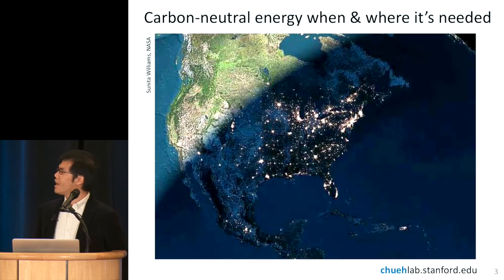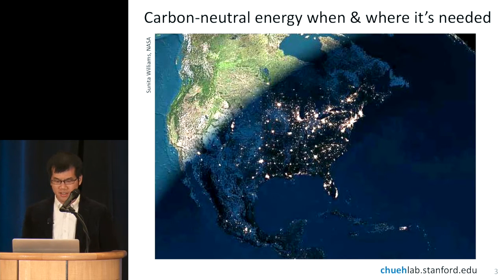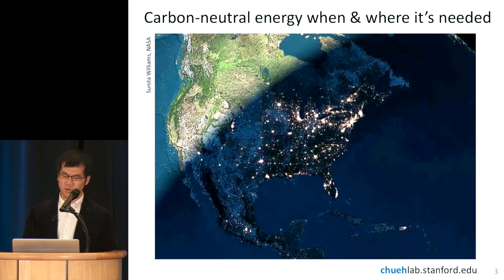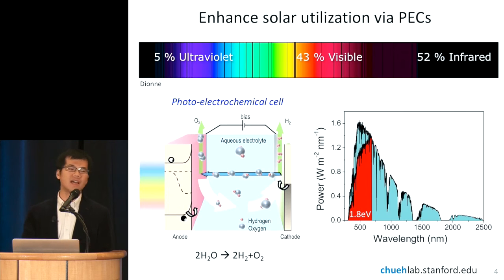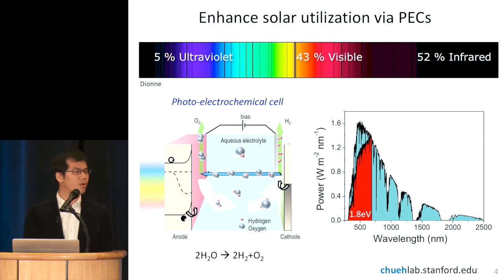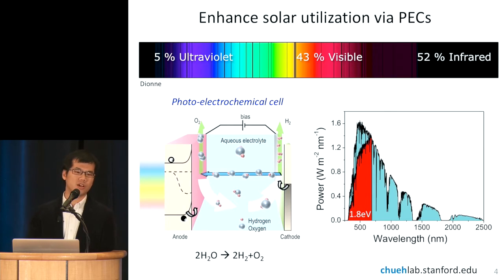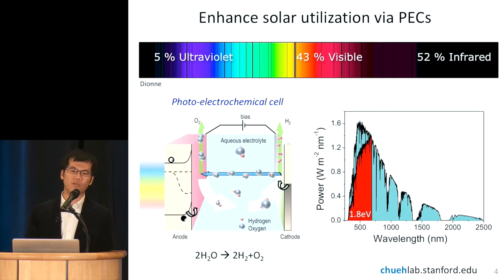I don't think I need to tell this audience the importance of making carbon-neutral energy available when and where it's needed. Over the past few decades, there's really been a lot of progress made on how to use photoelectrochemical devices to enhance the utilization of solar energy, and particularly to convert it to chemical fuel by, for example, dissociating water into hydrogen and oxygen.